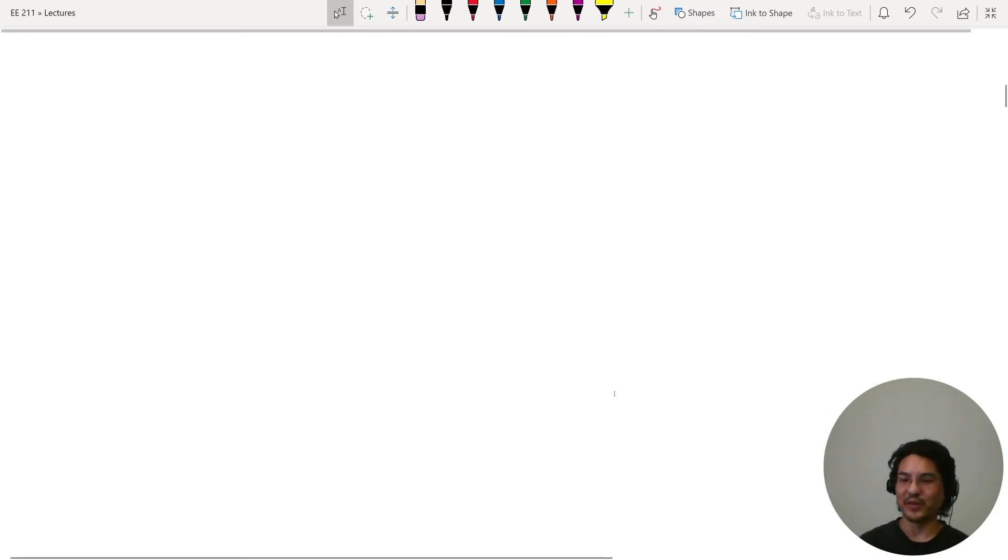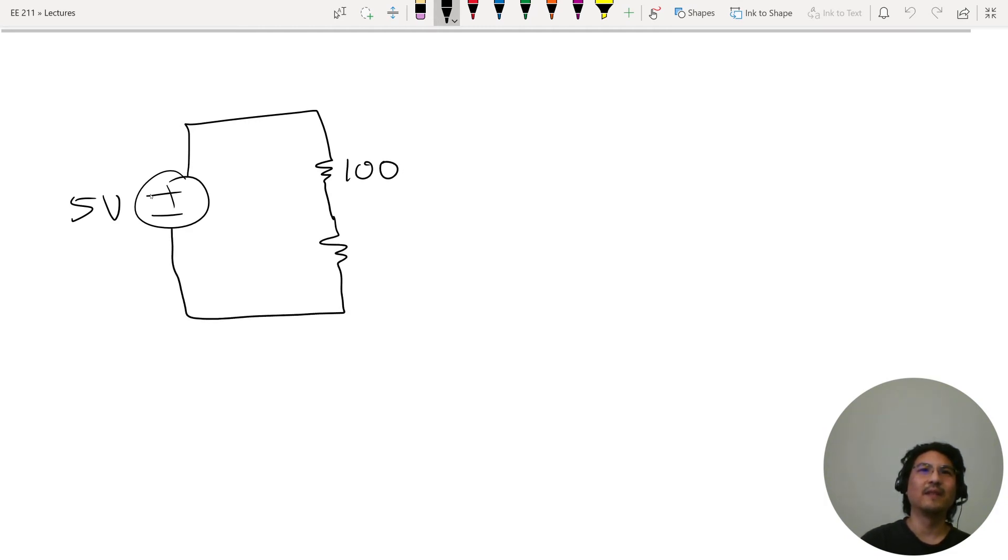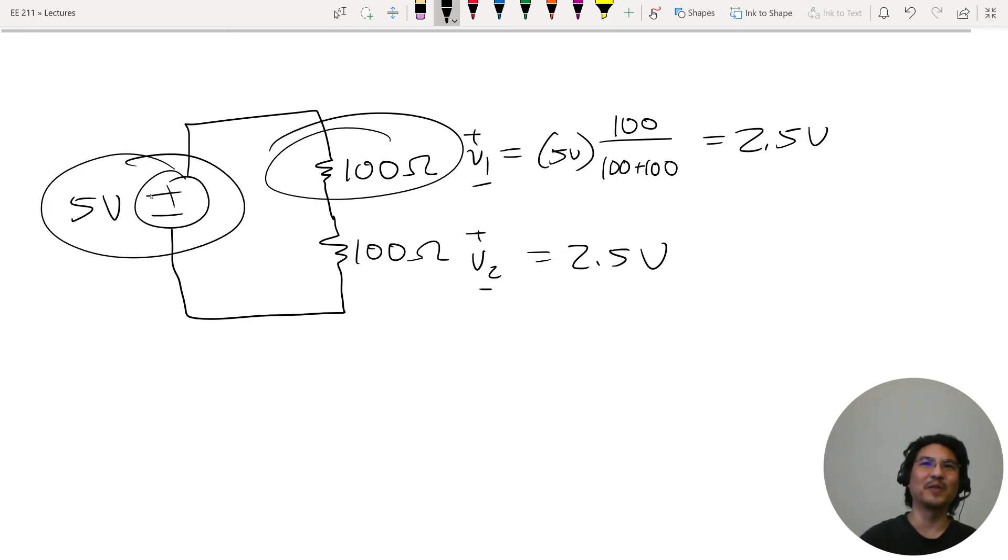So let's try with some numbers. Let's say you have a 5 volt supply and I put a 100 ohm resistor here and another 100 ohm resistor here. So how much voltage here and here? 2.5 volts and 2.5 volts, because let's say we call this V1 and this V2. V1 is source voltage times R1 over both in series, which is 5 times 100 over 200, so 2.5 volts. And this would also be 2.5 volts. So I took 5 volts and split it into 2.5 here, 2.5 here.